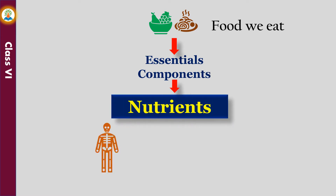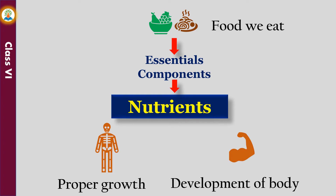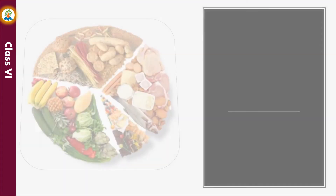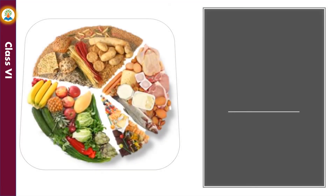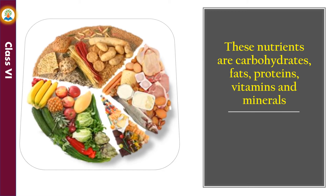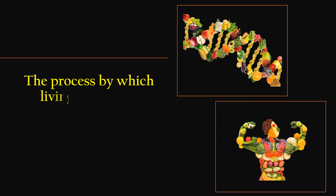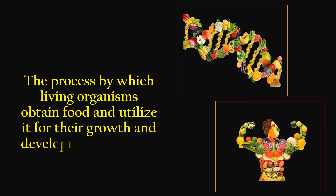Nutrients are chemical substances that provide nourishment for the proper growth and development of our body. These nutrients are carbohydrates, fats, proteins, vitamins, and minerals. The process by which living organisms obtain food and utilize it for their growth and development is known as nutrition.